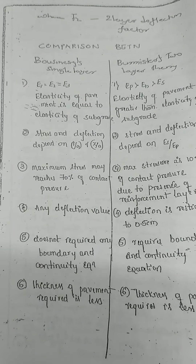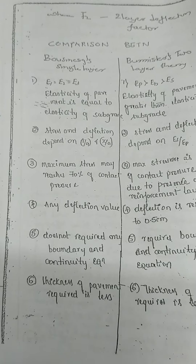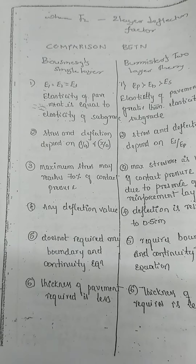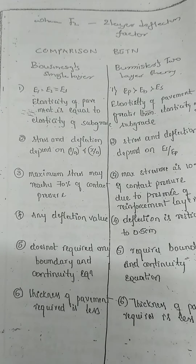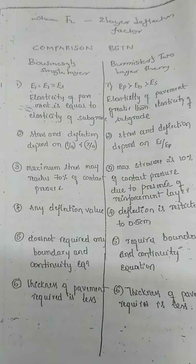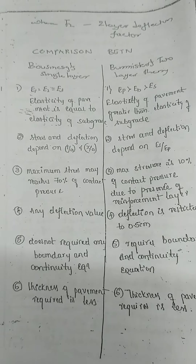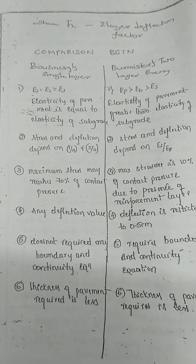Second difference: In Bosnick's theory, stress and deflection depend upon r/a and z/a values, whereas in Burmester's theory, stress and deflection depend upon es divided by eb.